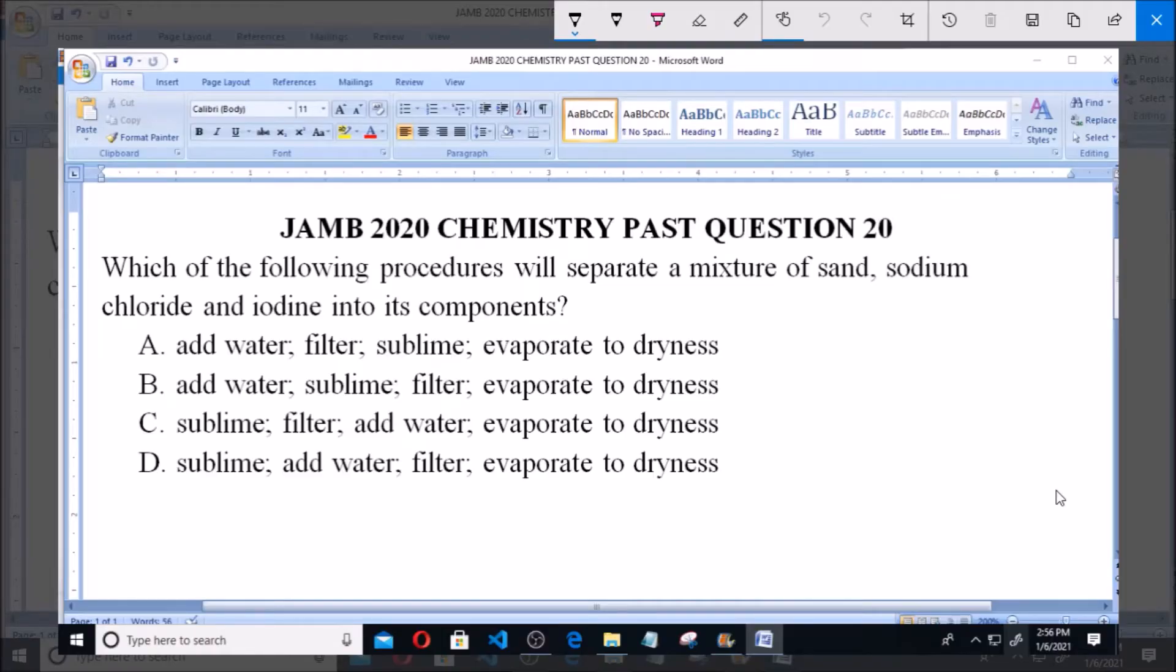Good day and welcome. I'll be answering JAMB 2020 Chemistry past question 20: Which of the following procedures will separate a mixture of sand, sodium chloride, and iodine into its components? A: add water, filter, sublime, evaporate to dryness. B: add water, sublime, filter, evaporate to dryness. C: sublime, filter, add water, evaporate to dryness. D: sublime, add water, filter, evaporate to dryness.